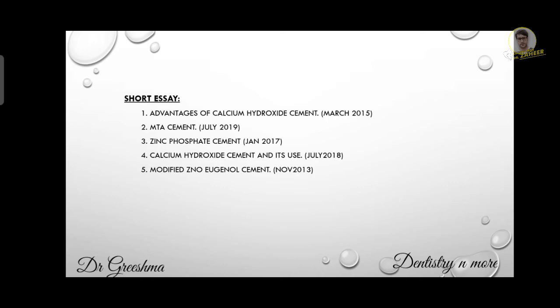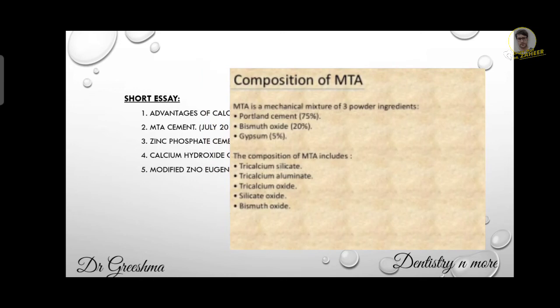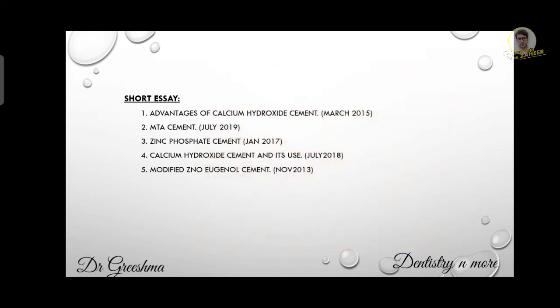The second question is MTA cement. First, the full form of MTA is Mineral Trioxide Aggregate. We have to write the composition, types, and uses of MTA. Coming to the composition, MTA is a mechanical mixture of three powders: 75% Portland cement, 20% bismuth oxide, and 5% gypsum. It is available in two types: white MTA and gray MTA. Gray MTA is not used in anterior teeth because of grayish discoloration. Uses of MTA include direct pulp capping, apexification, apexogenesis, and repair of perforations.